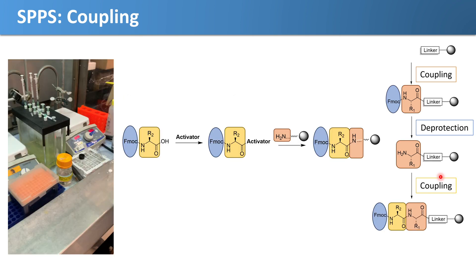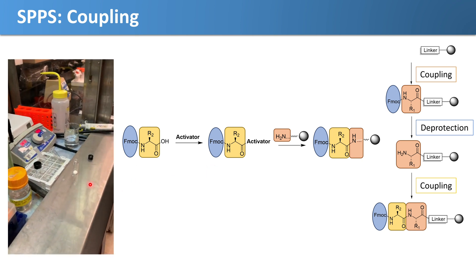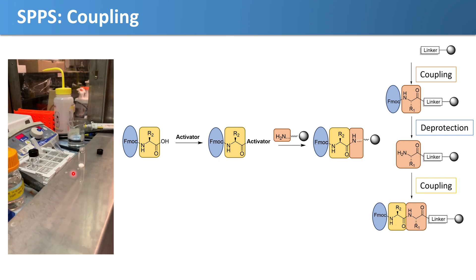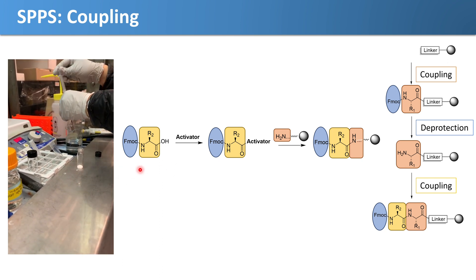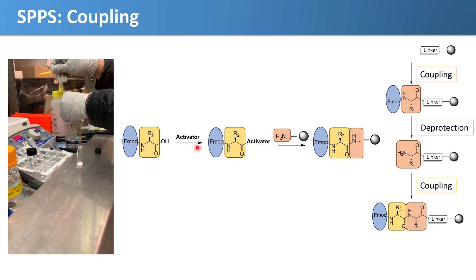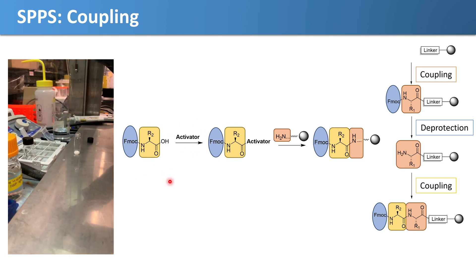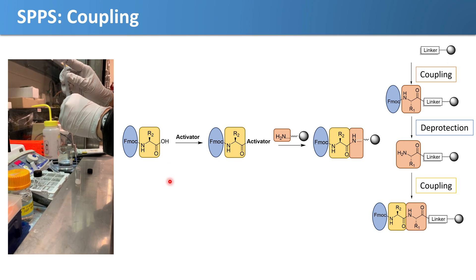After the deprotection is performed, our next reaction is a coupling again. But this one's a little different because our next amino acid is not reactive enough to just couple on here, so what you have to do is you have to activate it first. In this vial here, Huangine has our amino acid, our next amino acid, weighed out in a vial with the activator. Here she's adding DMF and she's going to dissolve the two.